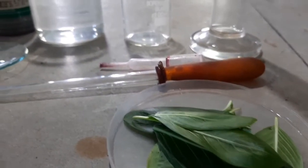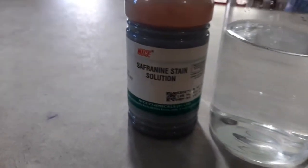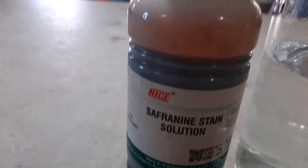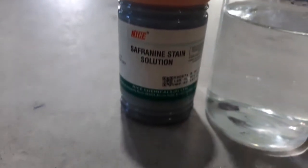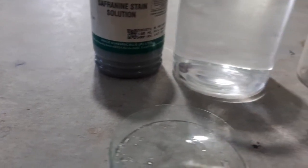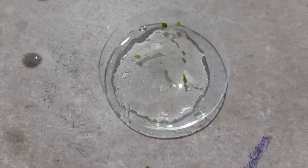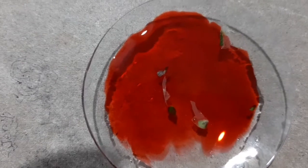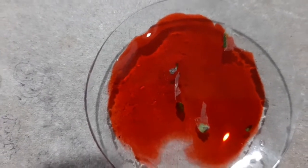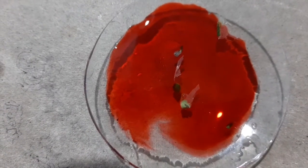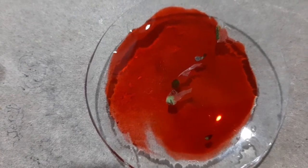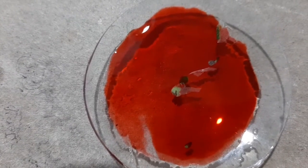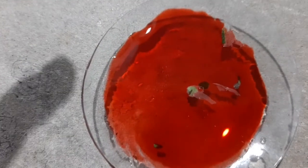After peeling out the epidermis, you keep this epidermis in a watch glass with distilled water so that this epidermis does not dry up. And then you can put a drop of the safranine stain and then you keep it for two to three minutes undisturbed so that the piece gets stained.